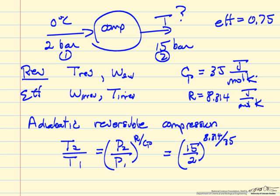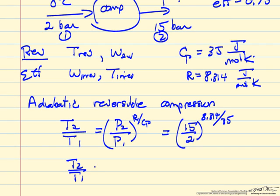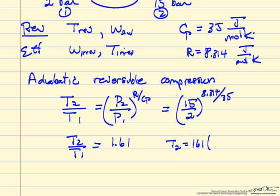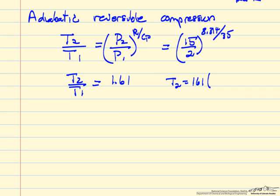We can do this calculation to get T2 over T1 is equal to 1.61. And this means that we have T2 is 1.61 times initial temperature, inlet temperature, 0 plus 273. So absolute temperature. So T2 is 440 Kelvin. Remember this is the reversible temperature. This is our first step.